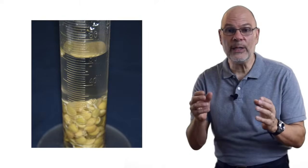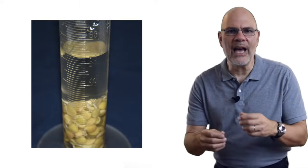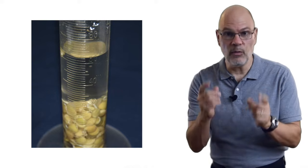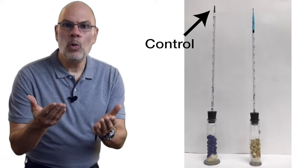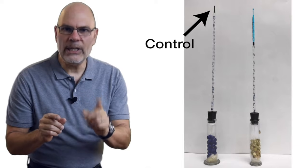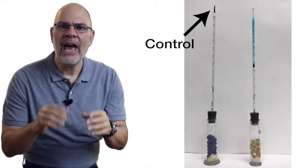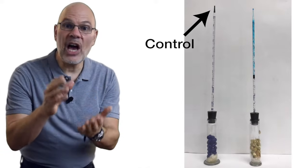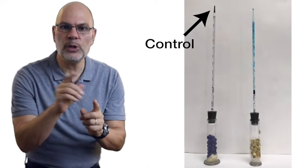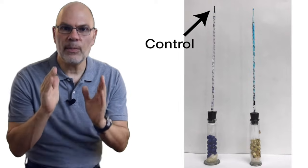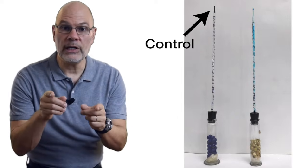To make sure that the volumes are equal, you can use a method like measuring volume by displacement of water. Now, let's observe this again with a control. Notice that in the control respirometer, the level of the food coloring isn't changing. And that means that the gas volume inside the respirometer isn't changing. The only difference between these two respirometers is the presence of our respiring organism.